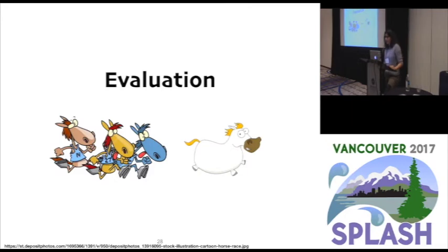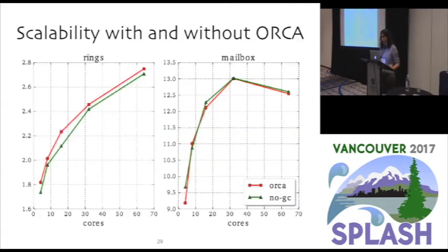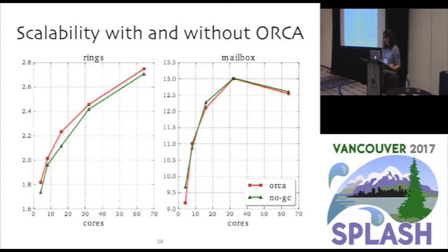We have done some evaluation, and today I'll show a small subset. The overall result is that we have seen quite interesting behavior of Pony with Orca, and we are super optimistic. The first test runs some micro-benchmarks with and without garbage collection. We run benchmarks typically found in actor benchmark suites at different core counts between 4 and 64, and measure execution time. What's really motivating is to see that Orca has very little or even no overhead in execution time.